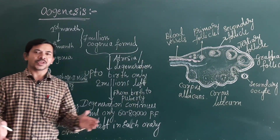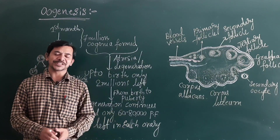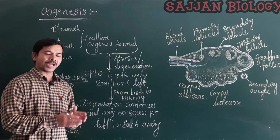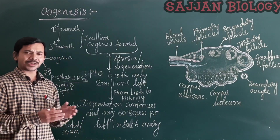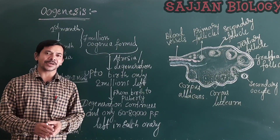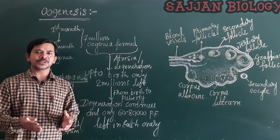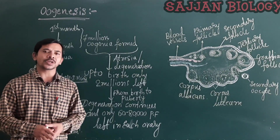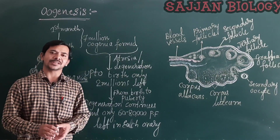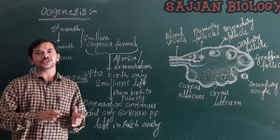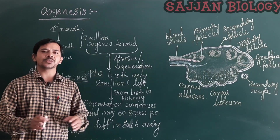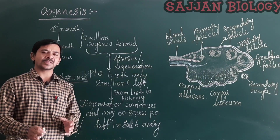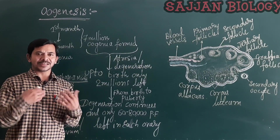Welcome back to surgeon biology classes. Today we are going to discuss oogenesis. Oogenesis is the process of formation of a mature female gamete. In comparison, spermatogenesis and oogenesis have key differences.